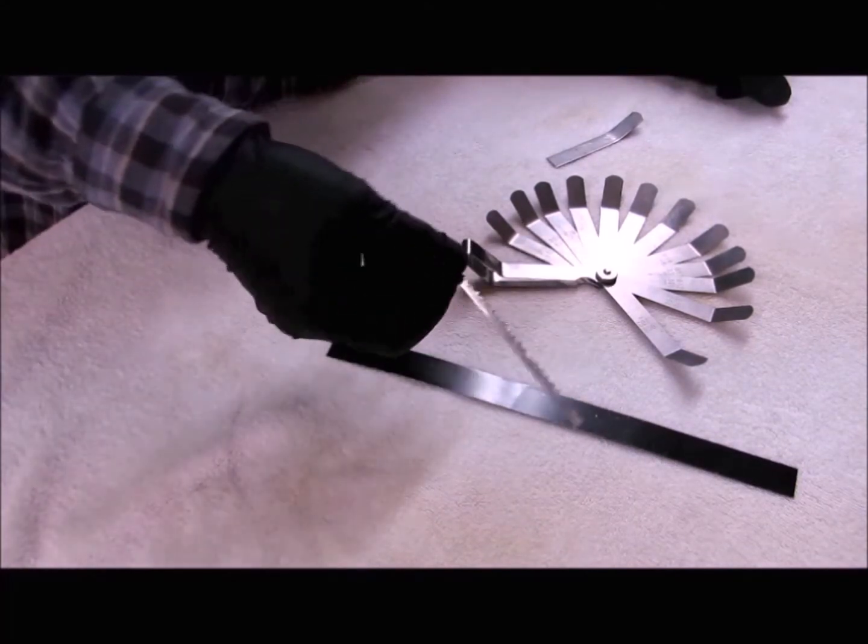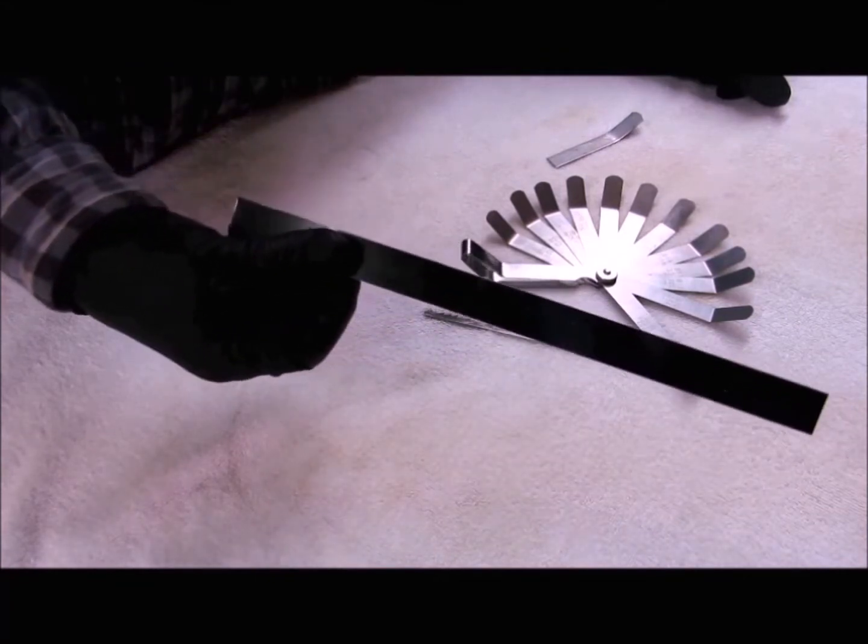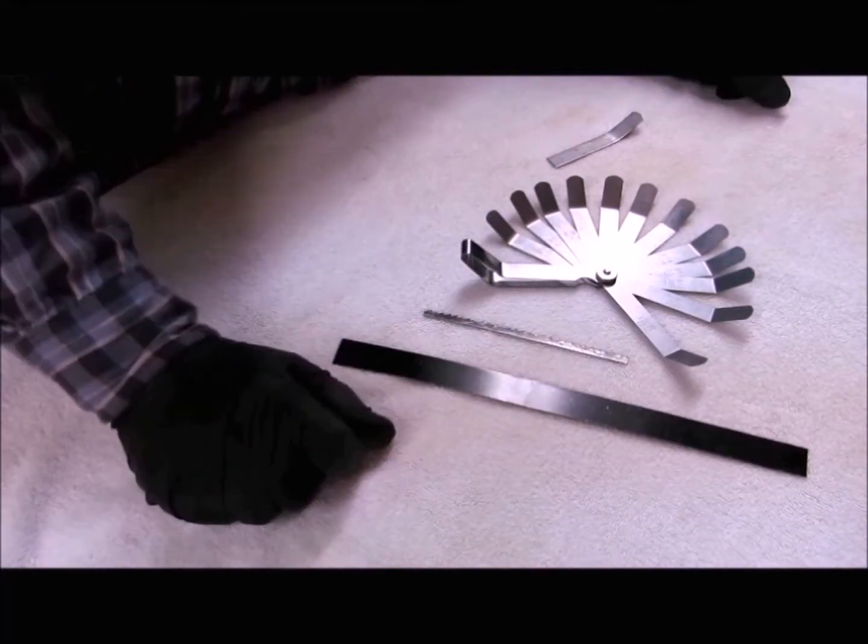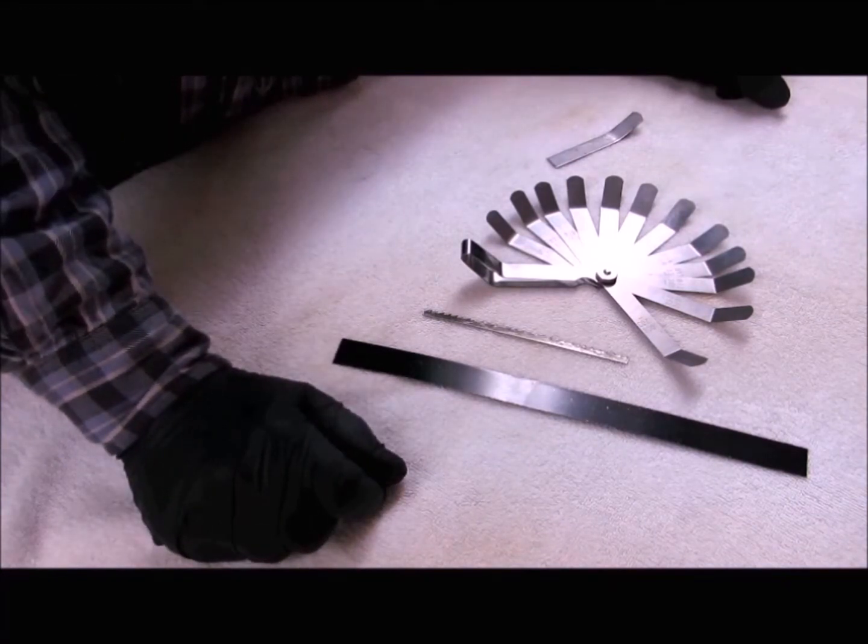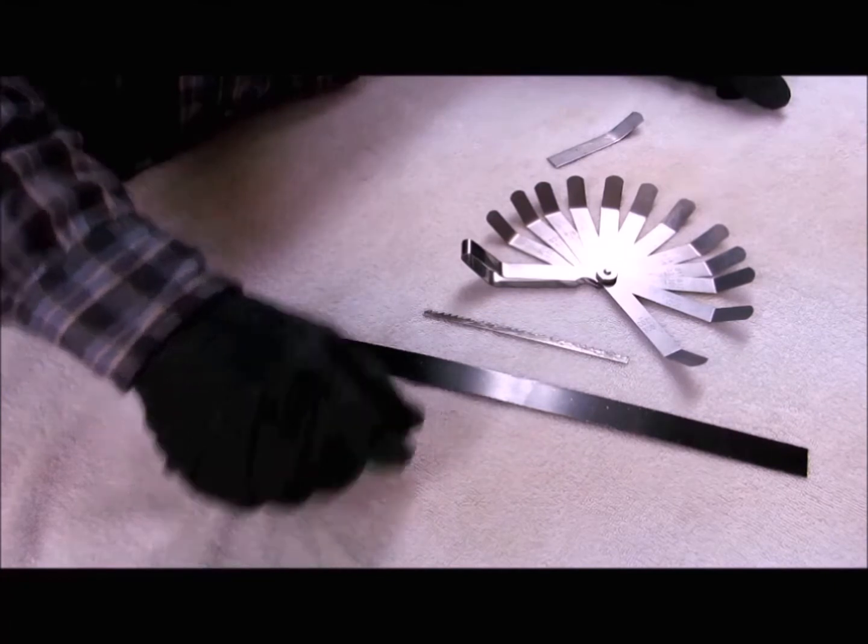Originally I used an old bandsaw blade or some of this metal strap that's used to tie materials down to a pallet. While they both worked, I didn't feel like either was good enough to be the main spring in a scope.